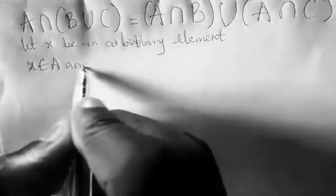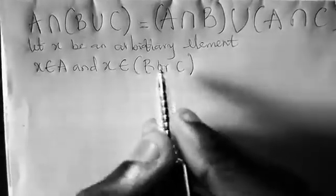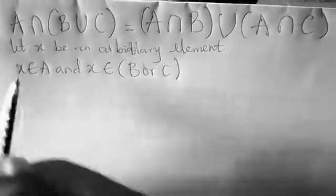The word 'and' means intersection, and x will also be a member of B or C. Union means 'or', intersection means 'and'. So the next thing to do now is...